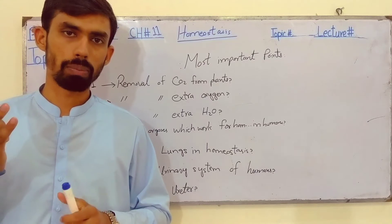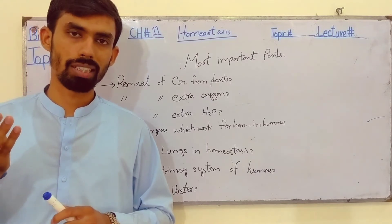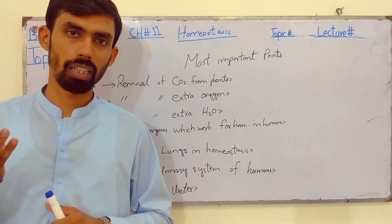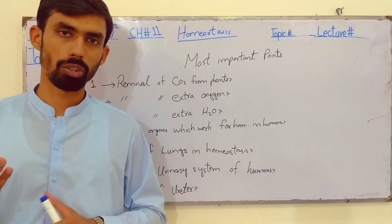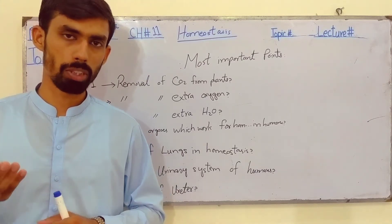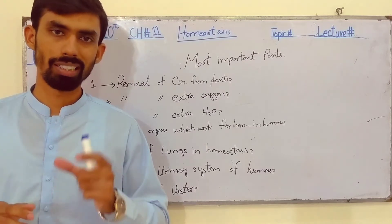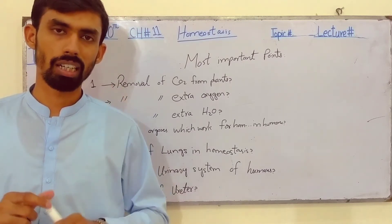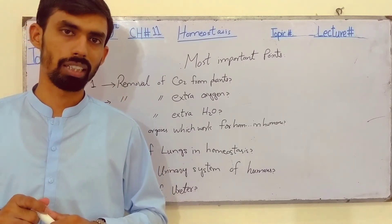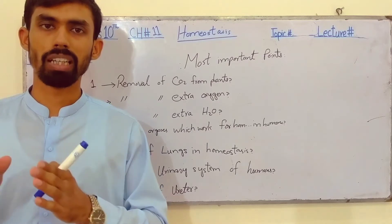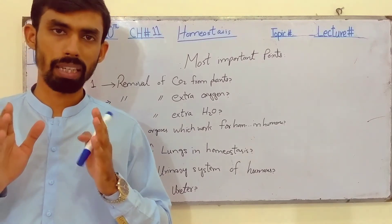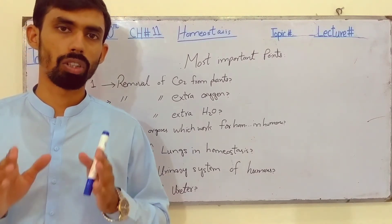In this chapter, we have studied homeostasis in plants, homeostasis in humans, the urinary system of humans. We have discussed the diseases and the treatment related to the kidney. Whatever the topic is, we have covered all the important aspects.